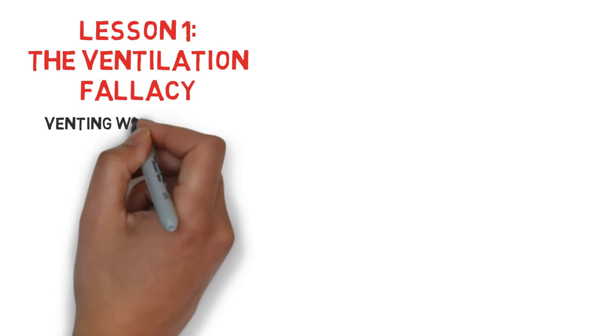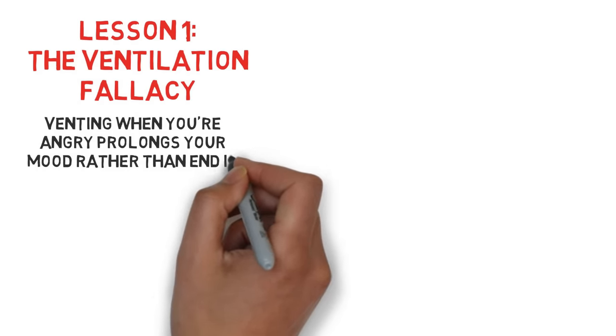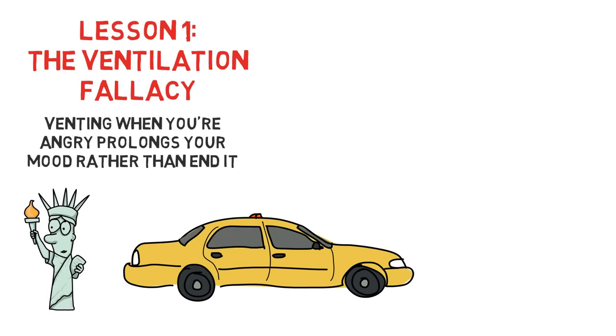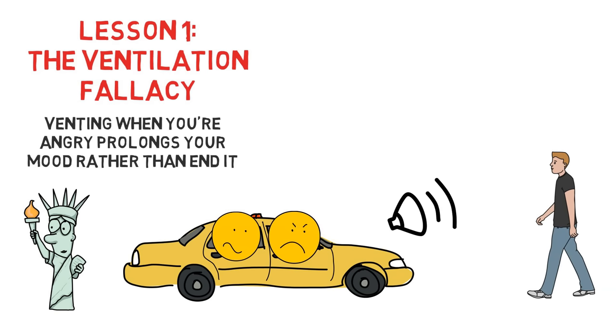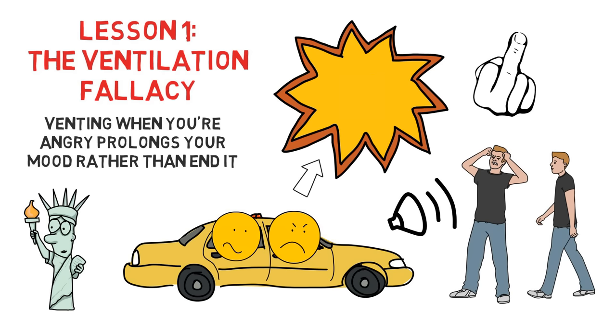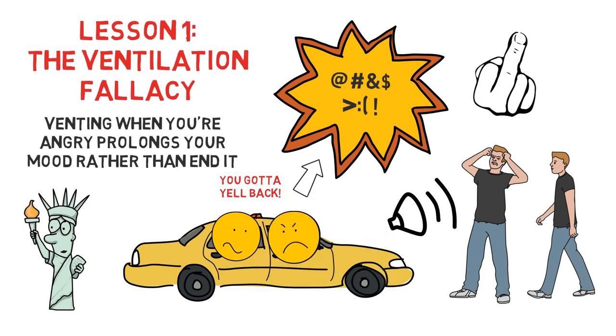Lesson one. The Ventilation Fallacy. Venting when you're angry prolongs your mood rather than ending it. Goleman tells of a story where he's in New York, and he hops in a cab. The impatient cab driver honks the horn, signaling a young man to move out the way. The young man flips a bird, so the cab driver yells back, You son of a bitch. Followed by revving the engine loudly out of anger. As the cab takes off, the driver then says, You can't take shit from anyone. You gotta yell back. At least it makes you feel better.